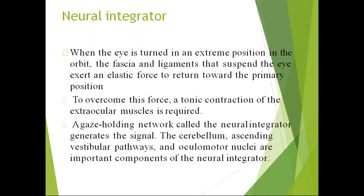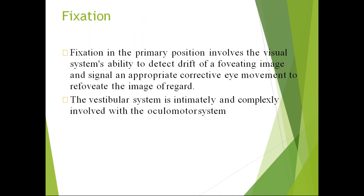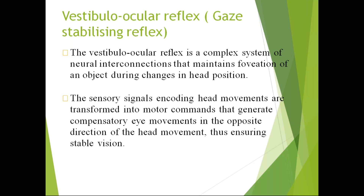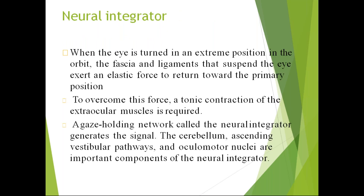The neural integrator generates signals sent to the cerebellum, ascending vestibular pathway, and oculomotor nuclei to bring the eyeball to primary position after it moves to extremes. If the fovea is not fixating properly or is underdeveloped, fixation will not occur and there will be nystagmus. If the vestibulo-ocular reflex is not stabilizing gaze properly, the gaze keeps drifting, leading to nystagmus. Similarly, if the neural integrator doesn't generate signals properly, the eye will have nystagmus.